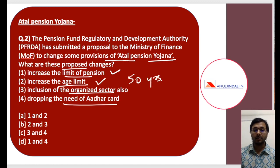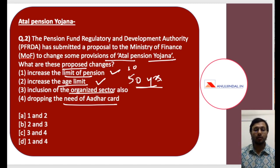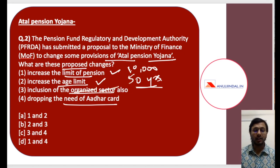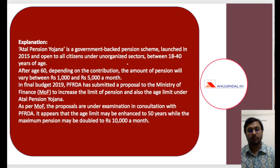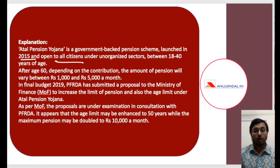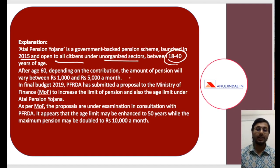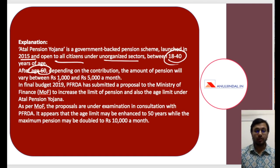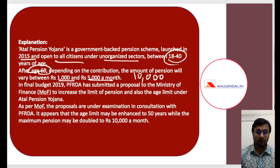It is proposed that the age limit should be increased from 18–40 to 18–50 years, and the maximum limit of pension should be increased to Rs 10,000 per month. Presently it is at Rs 5,000. The organized sector is still not part of Atal Pension Yojana. The scheme was launched in 2015 and is open to all citizens in the unorganized sector between 18 to 40 years. After you turn 60, you start getting pension ranging from Rs 1,000 to Rs 5,000 per month. The proposal is to raise the maximum limit to Rs 10,000 as well.